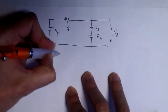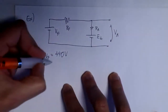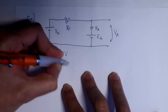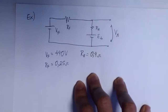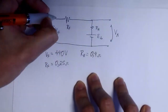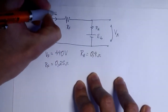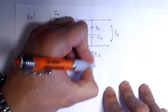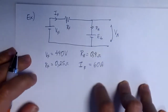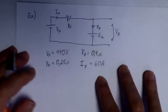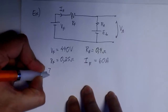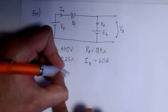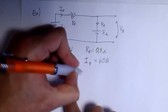Let's say we have a series motor with an input of 440 volts. The resistance of the field windings RF is 0.25 ohms, and the resistance of the armature windings RA is 0.4 ohms. The current flowing through the field windings IF is 60 amps. We want to find the efficiency of the motor, given that the mechanical losses are approximately 10 watts.